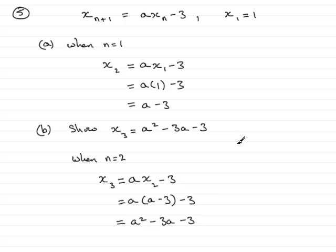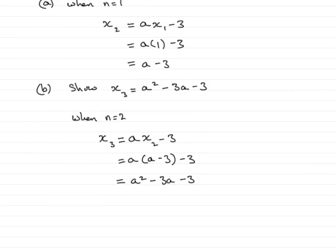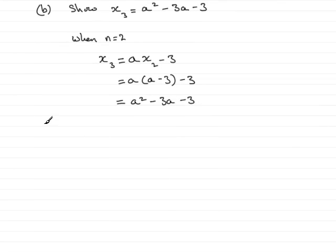Now, for part c, we're told that the third term in the sequence is 7, and we've got to find out the possible values of a. So given that x_3 equals 7, all we've got to do is put that this expression here, which is x_3, must equal 7, so therefore we have that a squared minus 3a minus 3 equals 7.